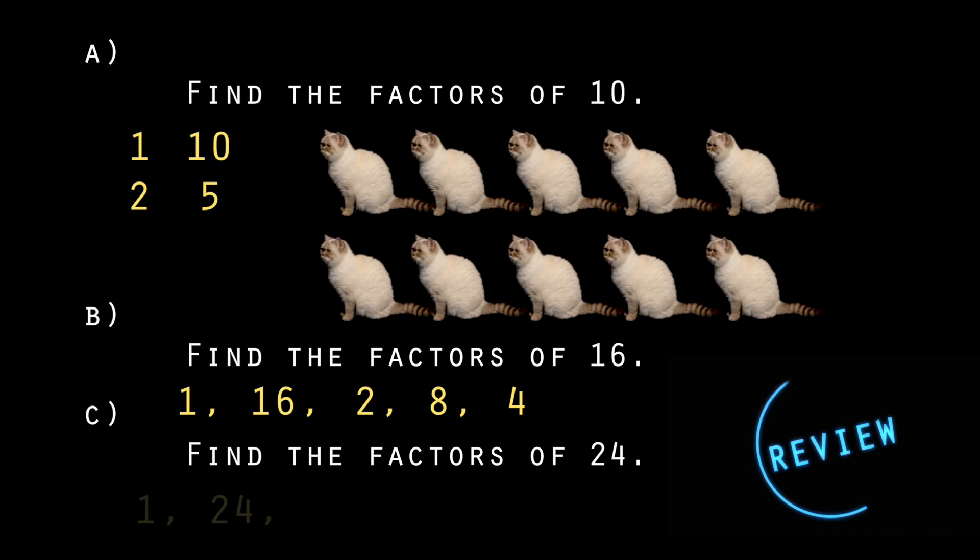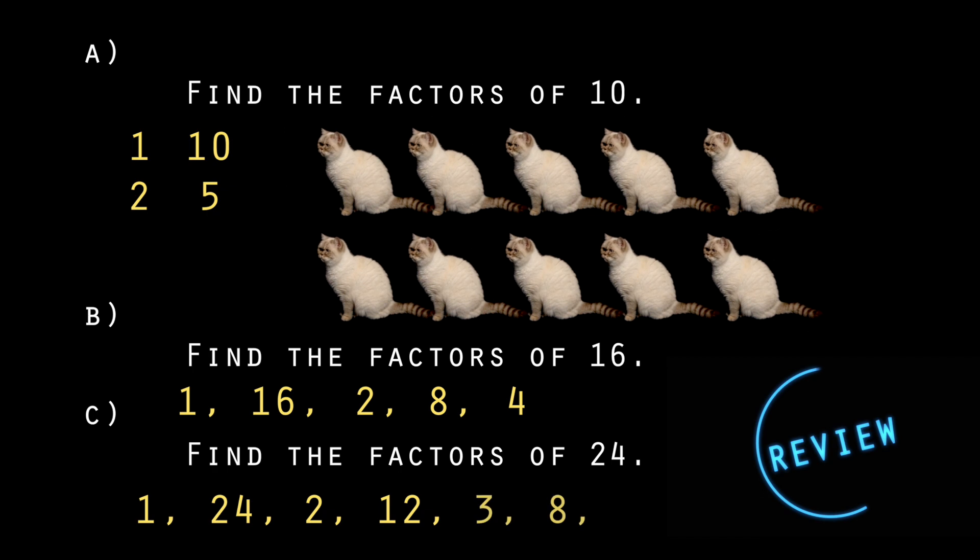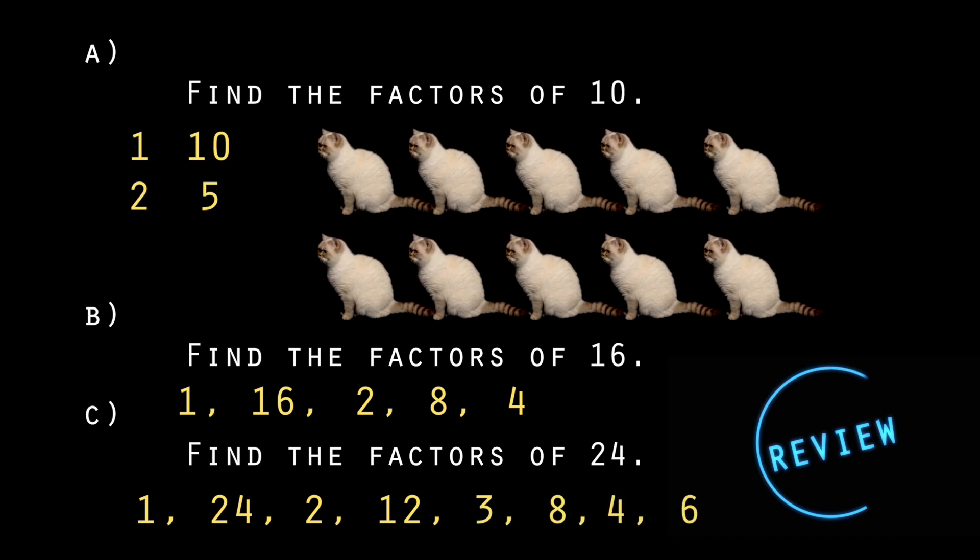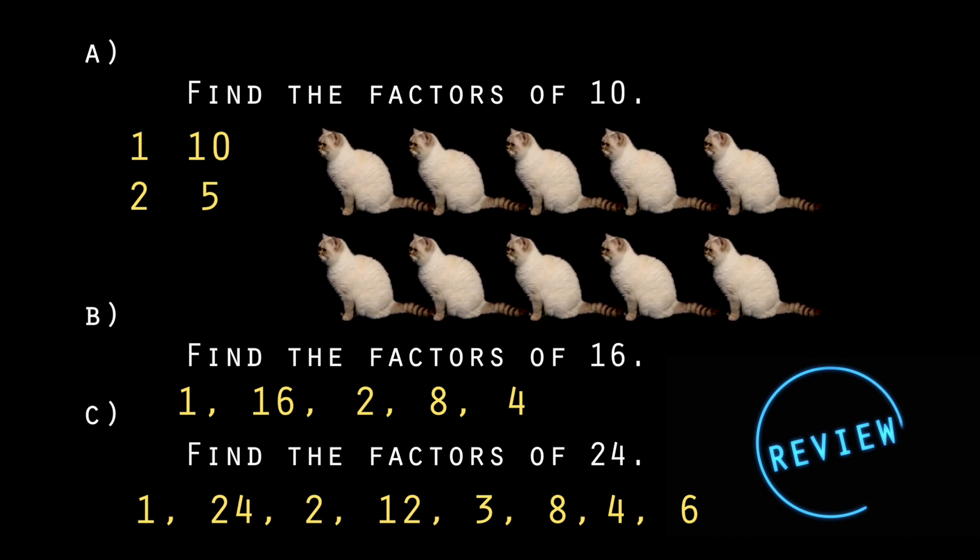For 24, the factors are 1 and 24, 2 and 12, 3 and 8, 4 and 6. You'll notice again that I'm listing the factors in ascending order, going up, and in their times table pairs. This helps me to know I'm not missing any out by mistake.